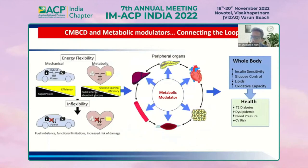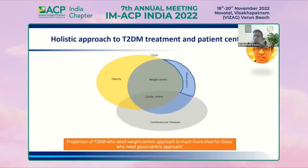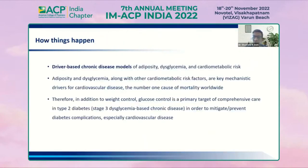We need metabolic modulators for good health. Today's treatment of type 2 diabetes requires moving beyond a glucocentric approach to a weight-centric, cardio-obesity-centric approach. The latest ADA-EASD and RSSDI-ESI guidelines show that the proportion of type 2 diabetes patients needing a weight-centric approach is much greater than those needing a glucocentric approach. Adiposity and dysglycemia are the key drivers for the number one cause of mortality worldwide. Weight control is as important a primary target as glucose control — specifically adipose tissue reduction to mitigate complications and prolong life, particularly for cardiovascular outcomes.